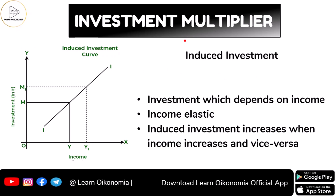This leads investment to have two divisions: the first is induced investment, and the second is autonomous investment. Induced investment is dependent on income — it is a function of income and is considered income elastic. Whenever your income rises, your investment too will increase, and whenever your income falls, your investment will also come down.